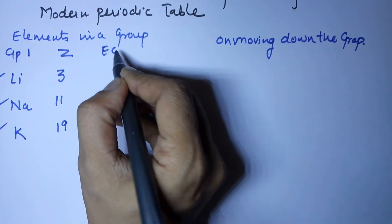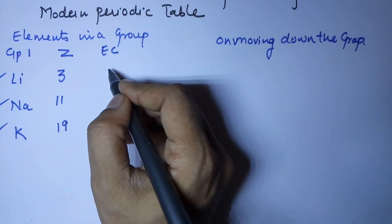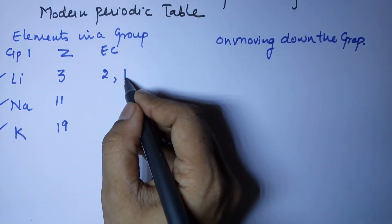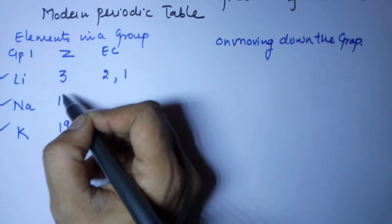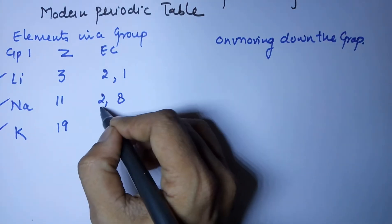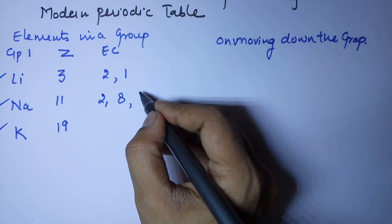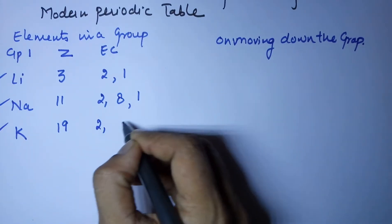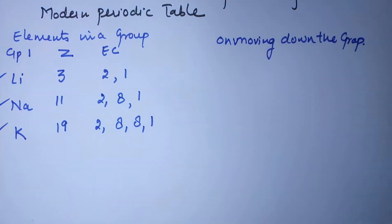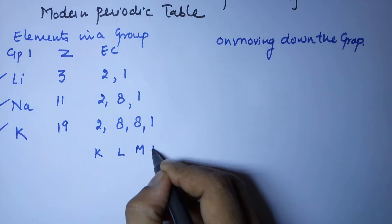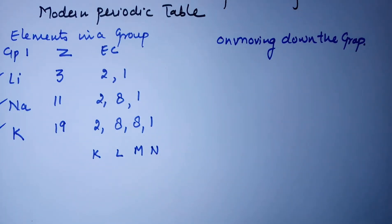Talking about electronic configuration on the basis of Bohr, you have K, L, M, N shells. For lithium, the first shell has a maximum capacity of 2, and the second shell has 1 electron, giving a configuration of 2, 1. For sodium, K shell has 2, L shell has 8, making 10 electrons, with the remaining 1 going to the next shell, giving a configuration of 2, 8, 1. Potassium has 19 electrons with a configuration of 2, 8, 8, 1.